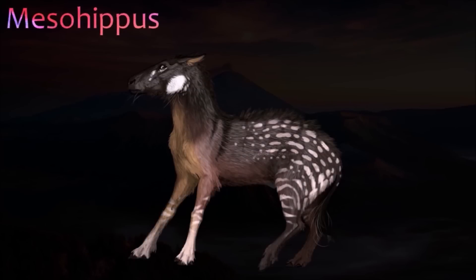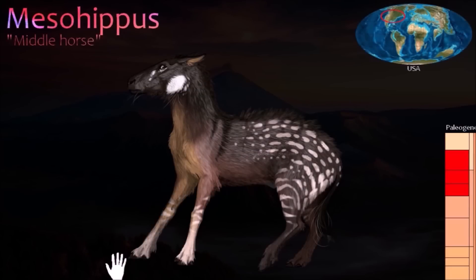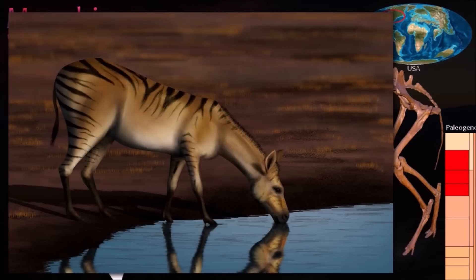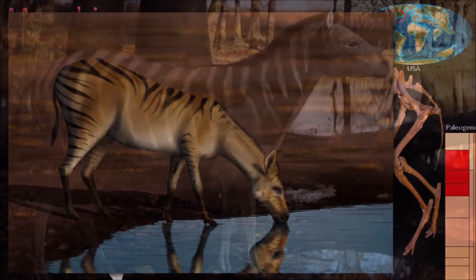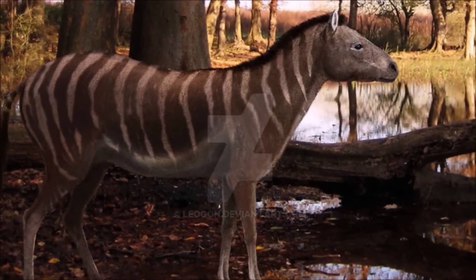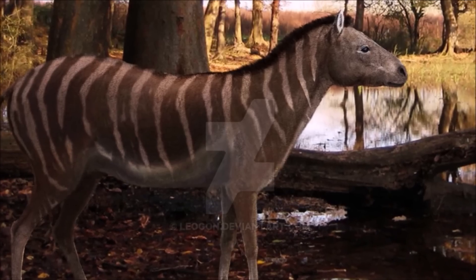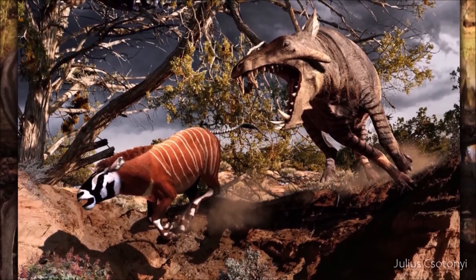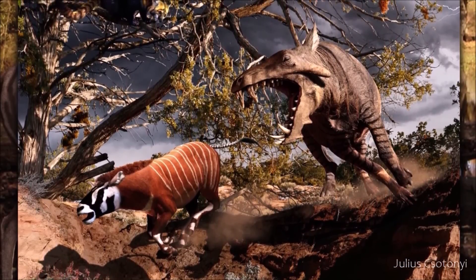An extinct horse about the size of a Great Dane dog, Mesohippus was found in the Big Badlands fossil beds of South Dakota. Like modern horses, it had a long snout with a gap between its front teeth and cheek teeth. Its teeth also show that Mesohippus was a specialized leaf-eater. During the early Oligocene, there were more than a dozen Mesohippus species, and by the end of that epoch it lived alongside its later relative Miohippus in several places.